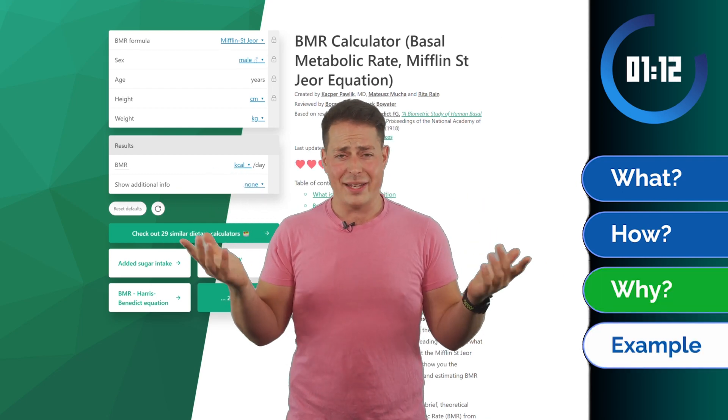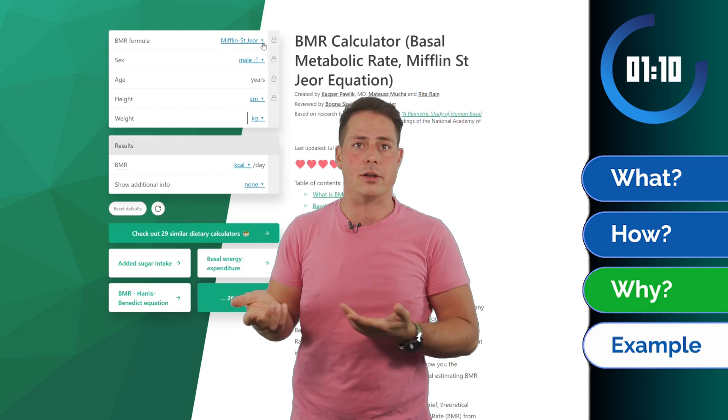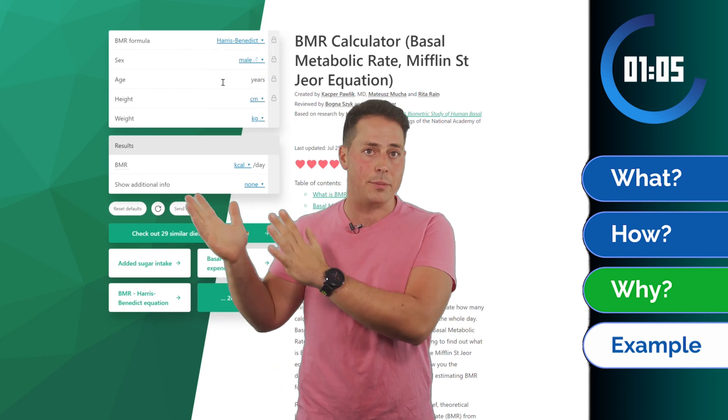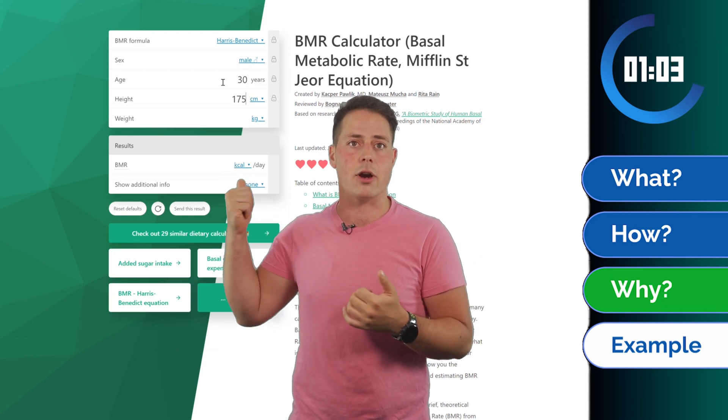So how much energy? It depends on the person, hence building a calculator and not just having a number. And for my particular body, it's around 1,977 calories for BMR and 2,173 for RMR.